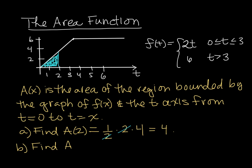A of 2 is the area of the region bounded by the graph of f of x and the t-axis from t equals 0 to x. In this case, x is 5. So it's everything we had before plus the area of all of that. To make this a little bit simpler, I'm going to break this region up into two pieces: the triangle that goes out to 3, and this rectangular area here.